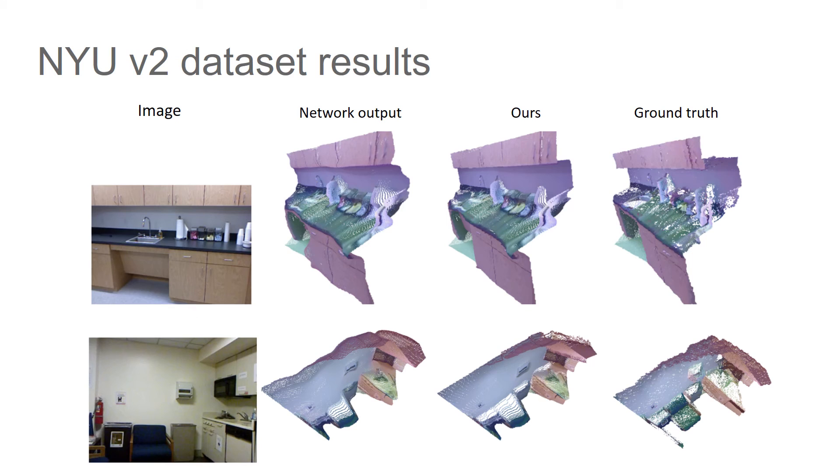We experiment our method on the NYU v2 dataset and observe our method produces better results over the planar regions in 3D space, while maintaining the good predictions over the object regions from the network so that we obtain better results quantitatively.